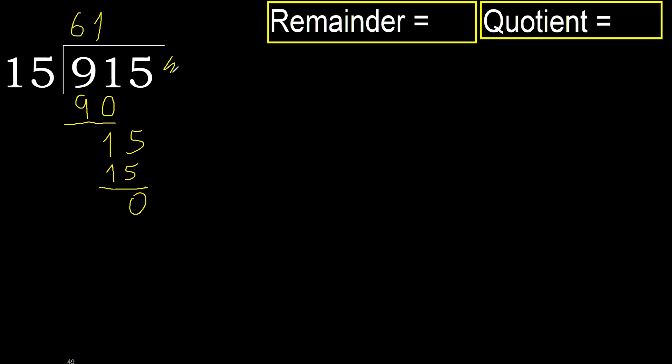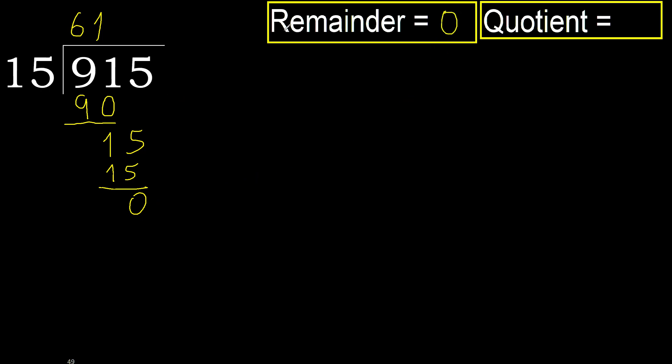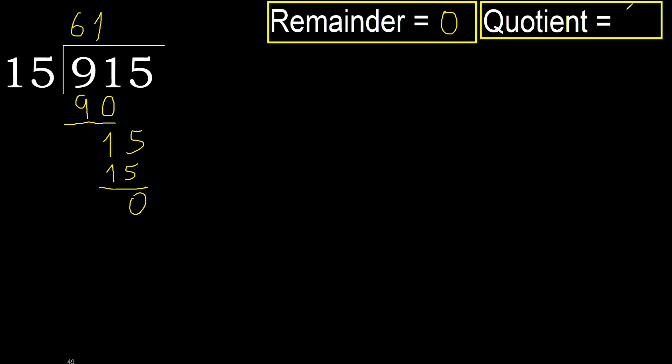Next, there is no number, therefore finish. 915 divided by 15 is 61.